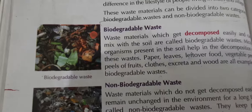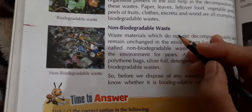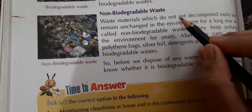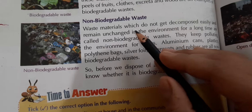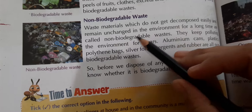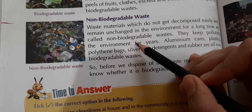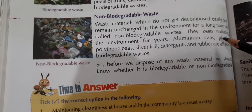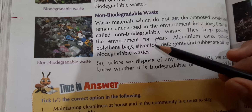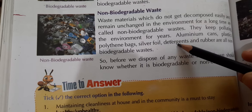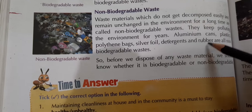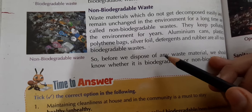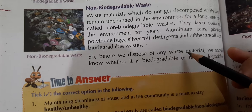Non-biodegradable waste: waste material which does not get decomposed easily and remains unchanged in the environment for a long time is called non-biodegradable waste. It keeps polluting the environment for years. Aluminium cans, plastic polythene bags, silver foils, detergents, and rubber are all non-biodegradable waste.